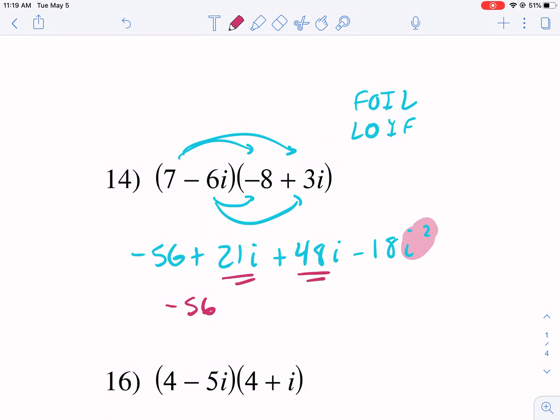-56, 21i + 48i. That's going to give us 69i minus 18 times a -1. This i squared becomes a -1. Now, because we have -18 times -1, it's going to be positive 18.